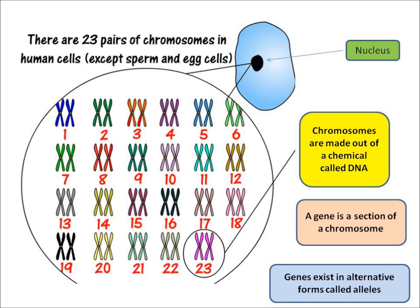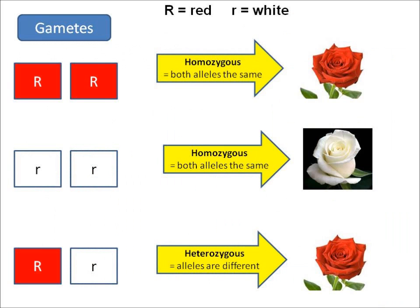We're looking at one of my cells here, and inside the cell is a nucleus. In that nucleus there are 46 chromosomes in one of my normal cells. Chromosomes are made out of a special chemical called DNA. A section of one of my chromosomes is called a gene, and a gene gives the instruction to make a protein. Sometimes the same gene exists in different forms, and each form is called an allele.